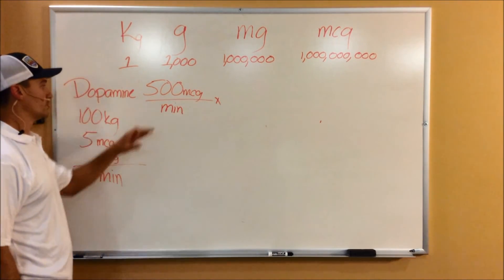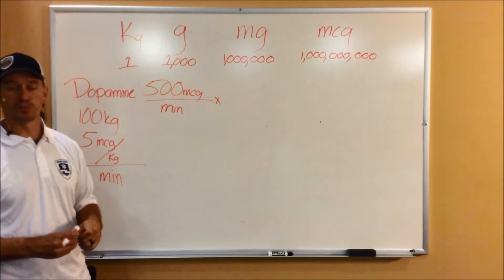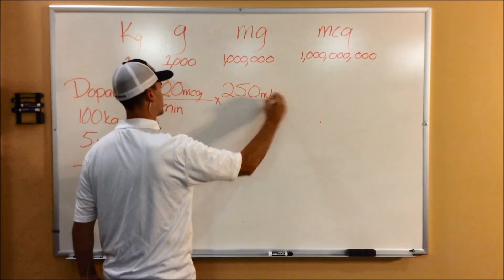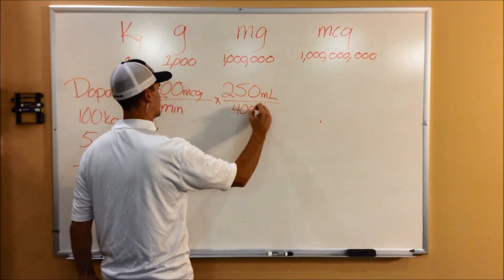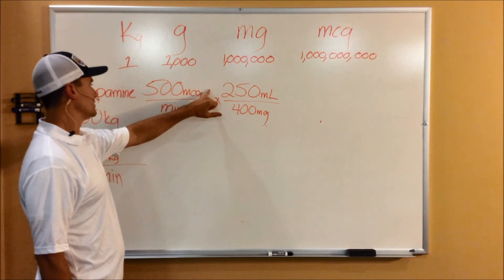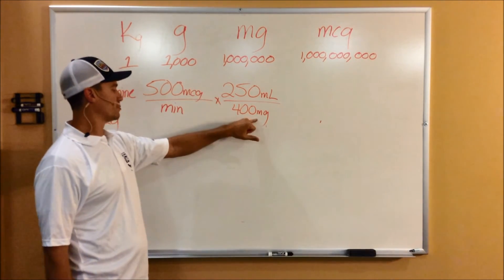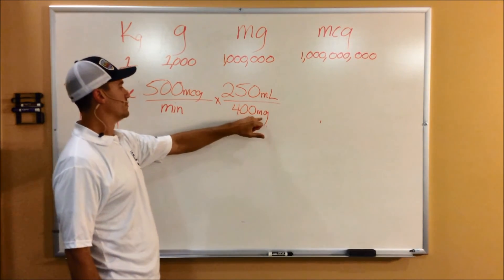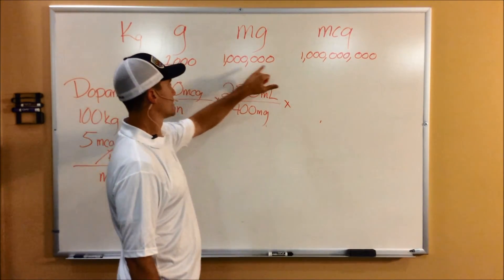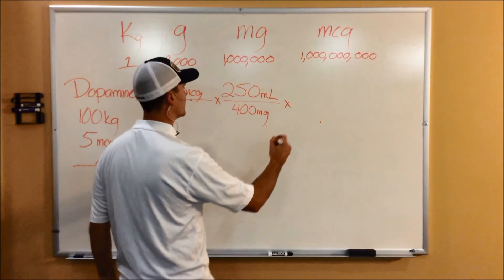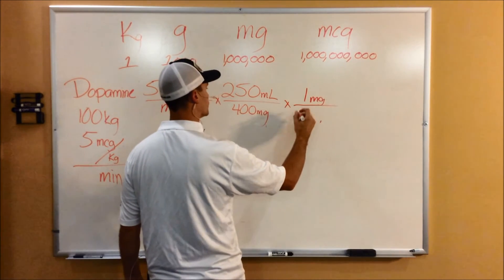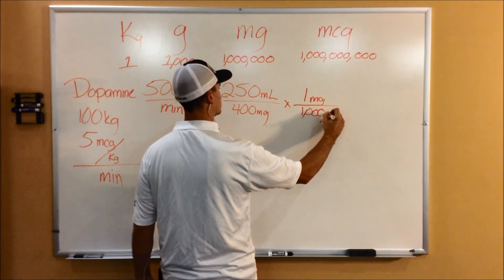Okay, so with drip math, we're doing dose times concentration. In concentration of dopamine, 250 ml per 400 micrograms. So here again, we had the micrograms on top, so we put milligrams on the bottom. So now we're going to have to figure out milligrams to micrograms. So up here again, if you're going from milligrams to micrograms, that's just a step of 1,000. So putting on the top here, 1 milligram equals 1,000 micrograms.